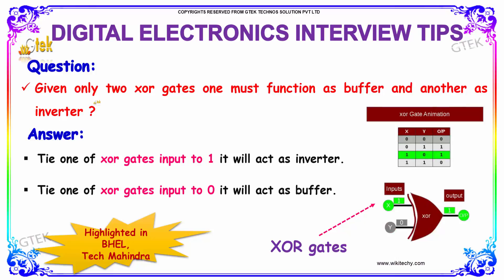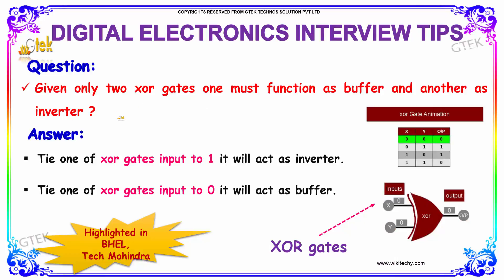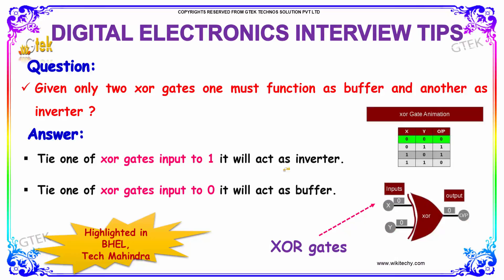The question is: given only two XOR gates, one must function as a buffer and another as an inverter. The answer is: tie one of the XOR gate's inputs to 1 and it will act as the inverter; tie one of the XOR gate's inputs to 0 and it will act as a buffer.